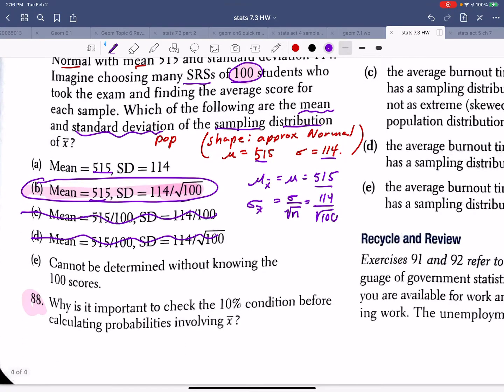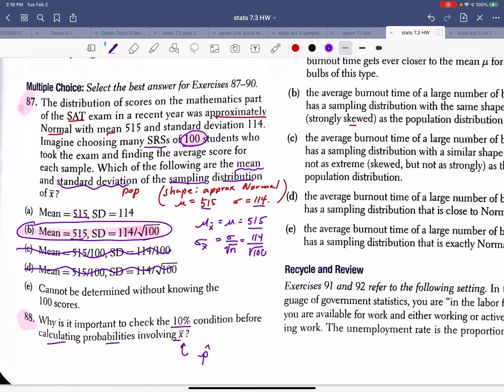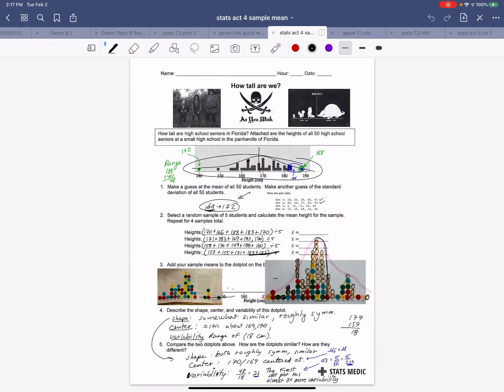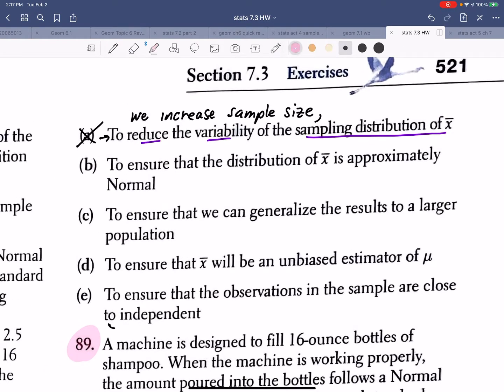So number 88. Why is it important to check the 10% condition before calculating probabilities involving X bar? And I'd also like to point out this was also important when I was calculating probabilities with P hat. So what is a 10% condition and why do we use it? So let's take a look. Do we use it to reduce the variability of the sampling distribution? And that would be no. Remember in our notes we're saying we increase sample size to reduce the variability, right? That's from our notes. This showed up on our 6-1 quiz as well, do you remember?